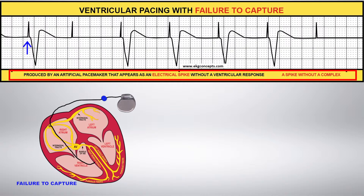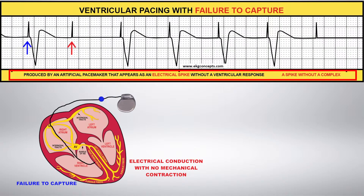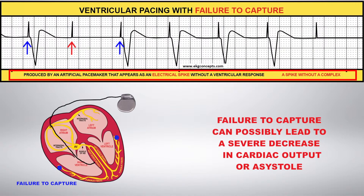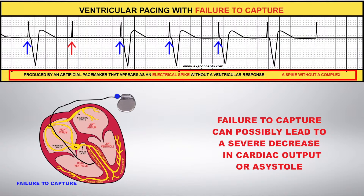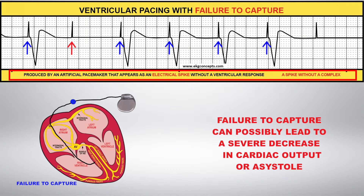In this example, the blue arrows represent electrical conduction with mechanical contraction, and the red arrows represent electrical conduction with no mechanical contraction. Failure to capture can possibly lead to a severe decrease in cardiac output or asystole.